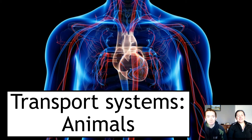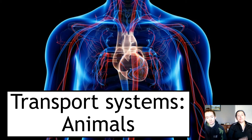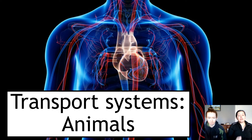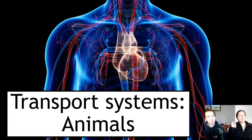Hi there. So this is Key Area 6, which is transport systems and animals of Unit 2, National 5 Biology, that being multicellular organisms. Key Area 6 has one more key area to go after this. This particular key area will be covered in three different videos covering blood, blood vessels, and then the heart. And we're starting with blood, but we'll give you a little overview of the unit to start off with.